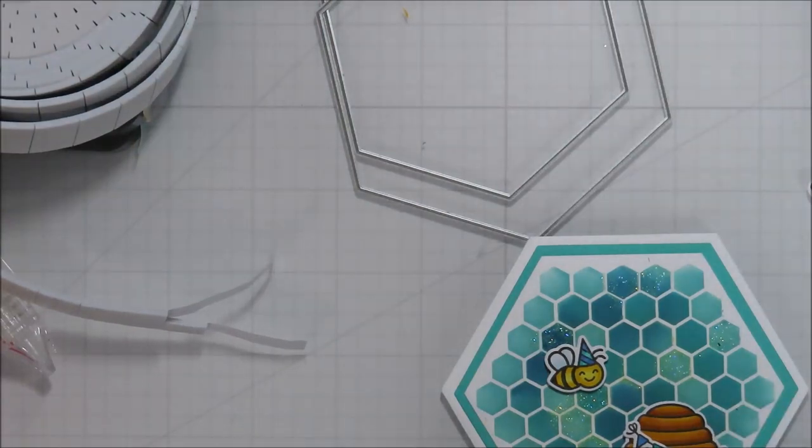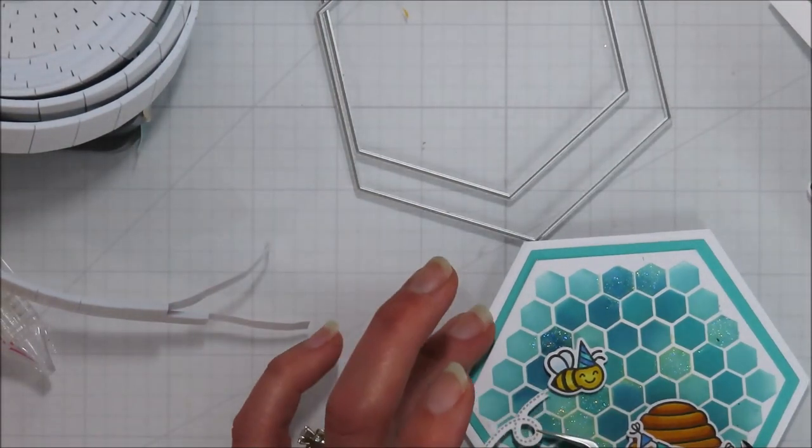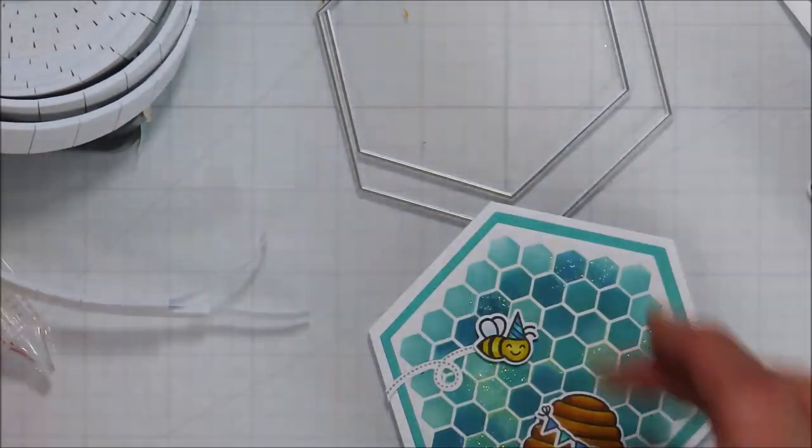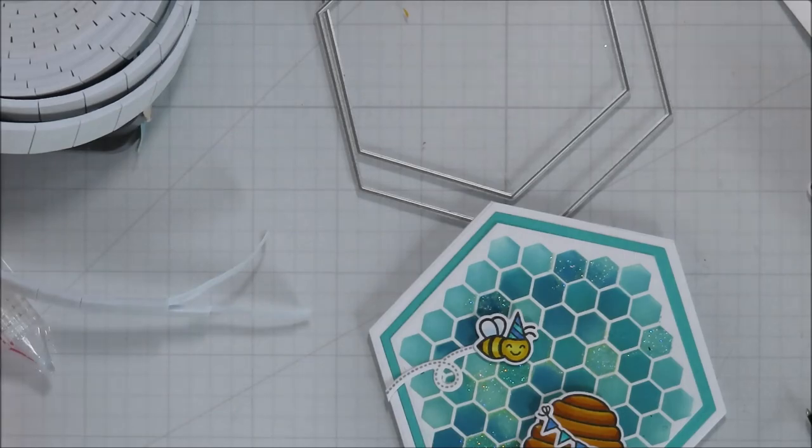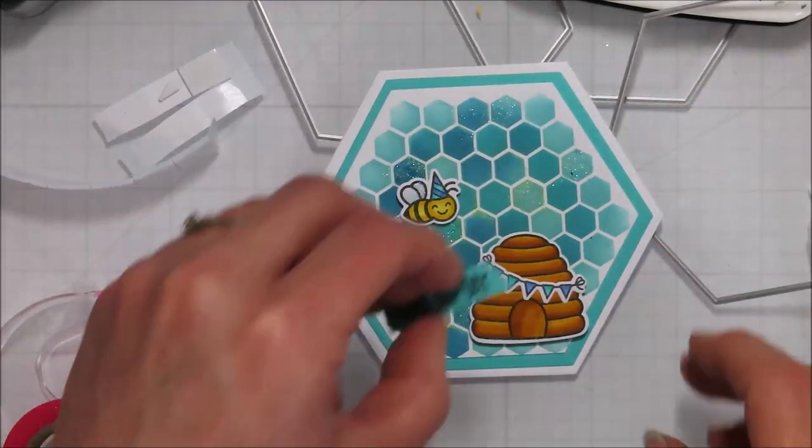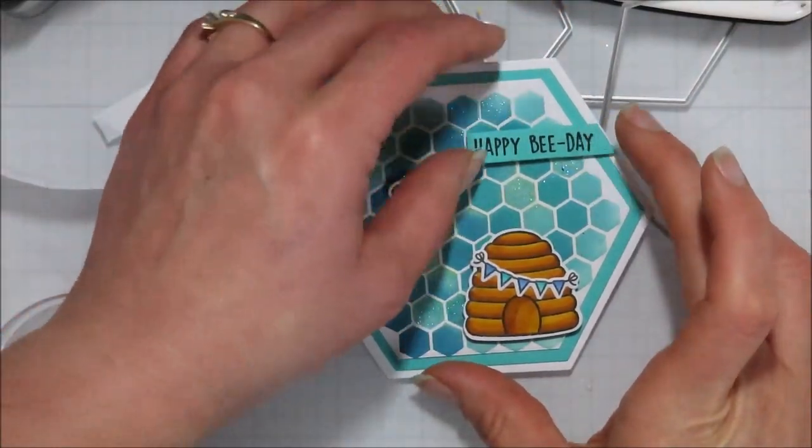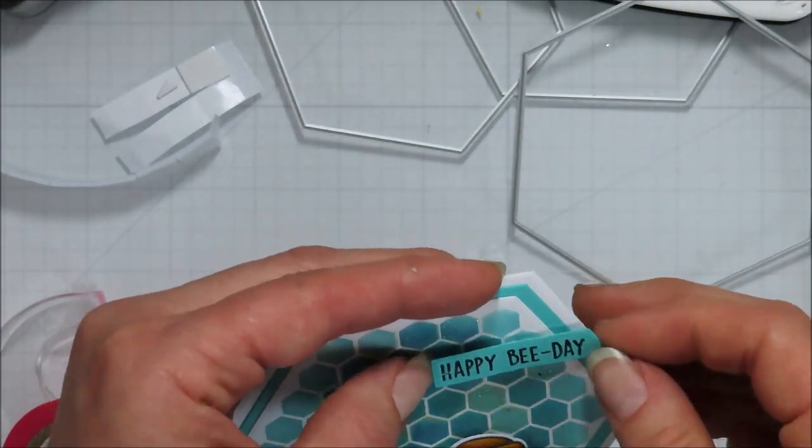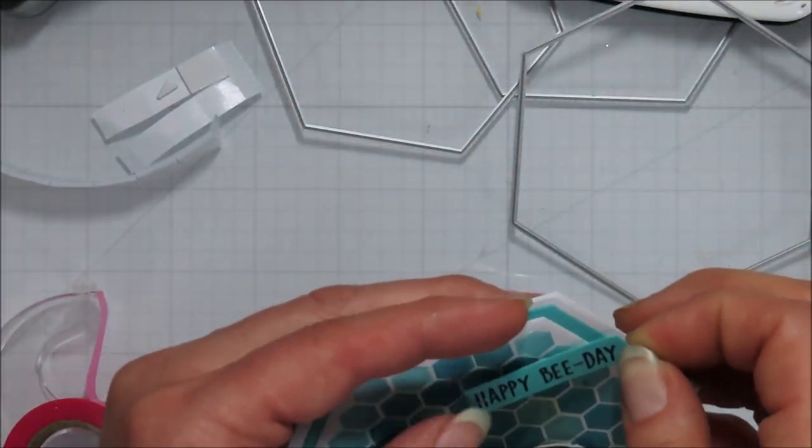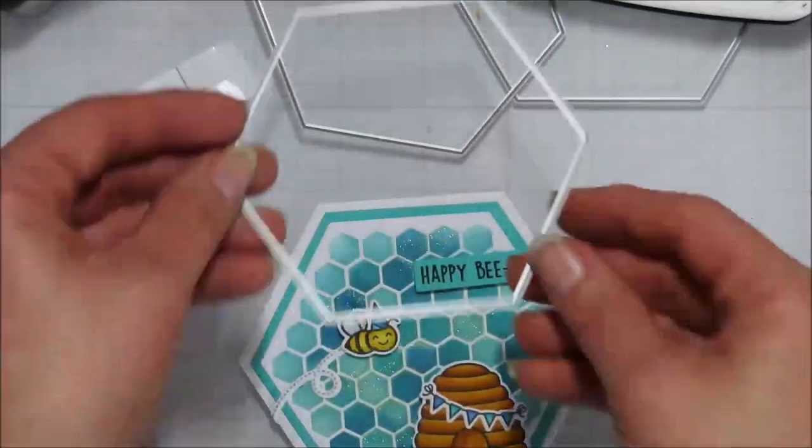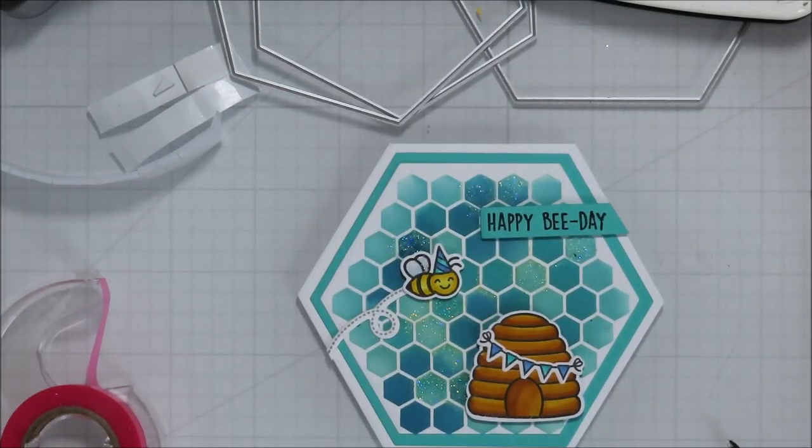So I did end up going a little off-screen here. Sorry for that. I did just add my hive up on some foam squares, and then the bee is on some foam squares as well, adding in that little bee trail, and then stamping my sentiment on the negative for that matted cardstock piece. So my angle is going to line up to the side of my card here, and then I don't actually have to cut anything off once that sentiment is on. Work smarter, not harder. Sometimes it works, sometimes it doesn't.